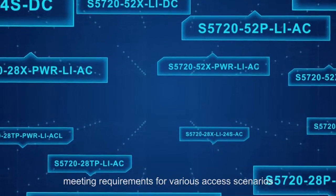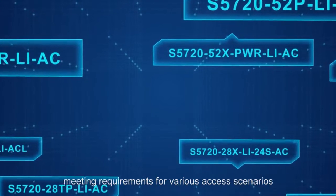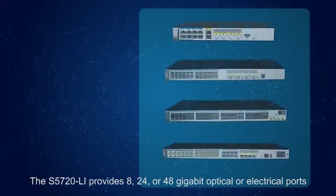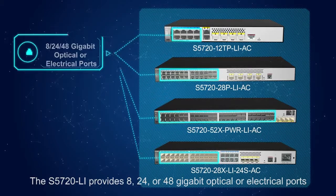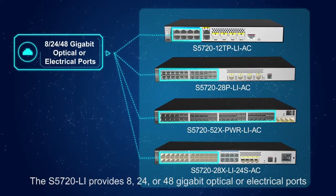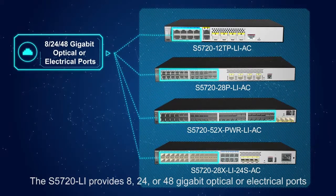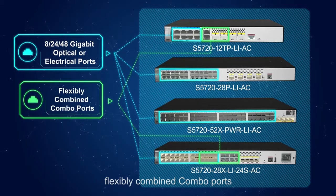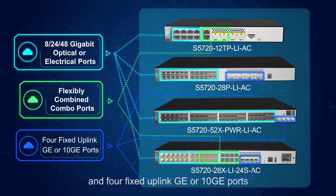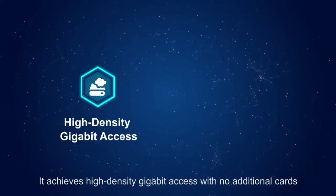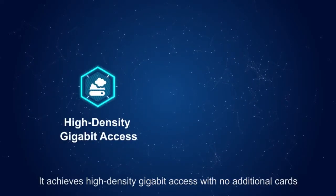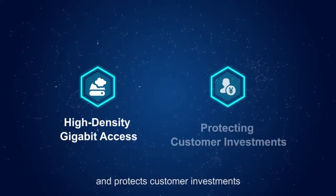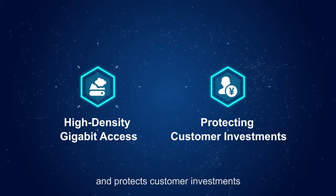The S5720 Li provides 8, 24, or 48 gigabit optical or electrical ports, flexibly combined combo ports, and four fixed uplink GE or 10 GE ports. It achieves high density gigabit access with no additional cards and protects customer investments.